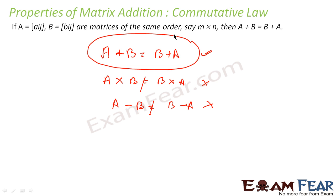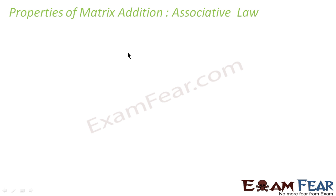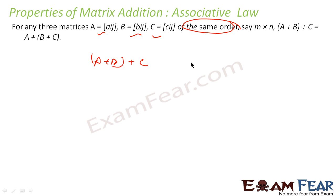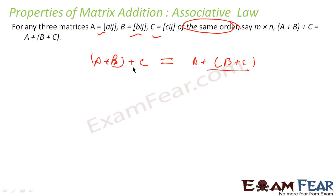For addition, commutative law is true: matrix A plus matrix B equals matrix B plus matrix A, given both matrices are of the same order. Associative law: if there are three matrices A, B, and C all of the same order, then A plus B plus C equals A plus B plus C. Both groupings give the same result — this is the associative law, similar to normal addition.